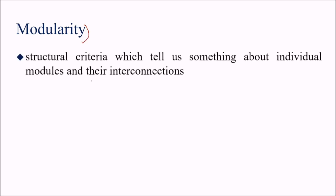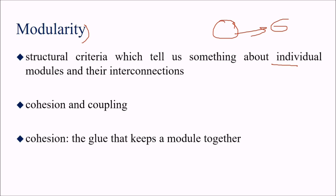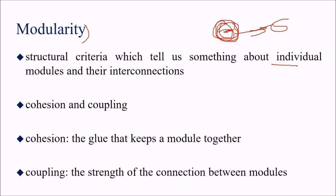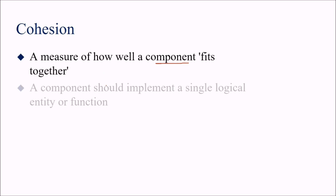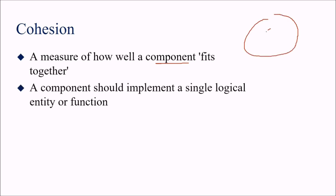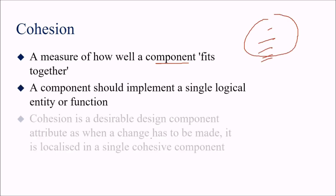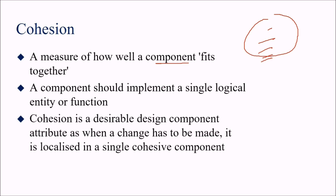What about modularity? Structural criteria tell us something about individual modules and their interconnections. Cohesion is the glue that keeps a module together — the functional strength or interdependence of the components of a module. Coupling is the strength of connection between two modules. We want cohesion to be highest and coupling to be least. Cohesion measures how well a component fits together; a component should implement a single logical entity or function. When a change must be made, it is localized in a single cohesive component and should not propagate to others.